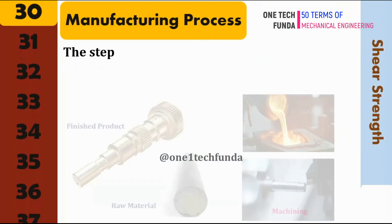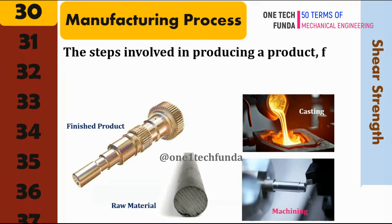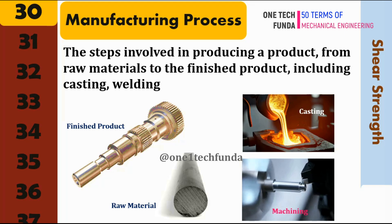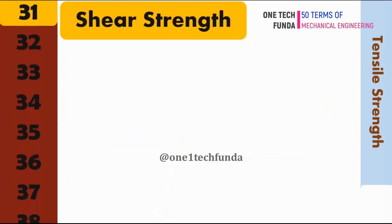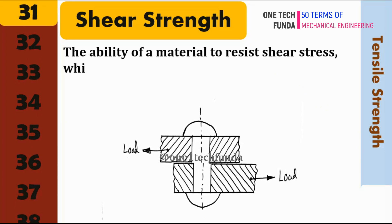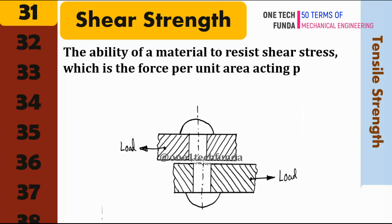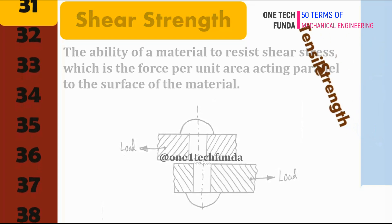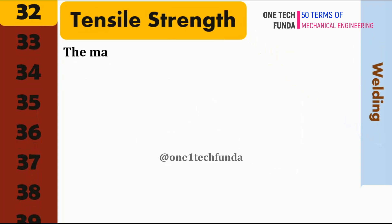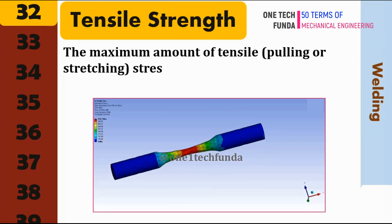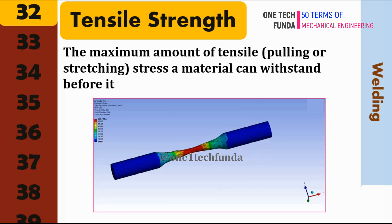Manufacturing Process: the steps involved in producing a product, from raw materials to the finished product, including casting, welding, and machining. Shear Strength: the ability of a material to resist shear stress, which is the force per unit area acting parallel to the surface of the material. Tensile Strength: the maximum amount of tensile stress a material can withstand before it breaks or fractures.